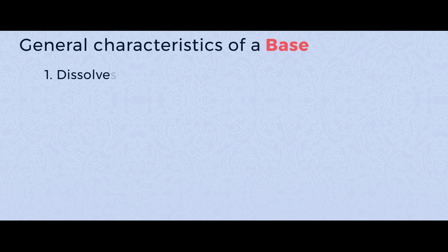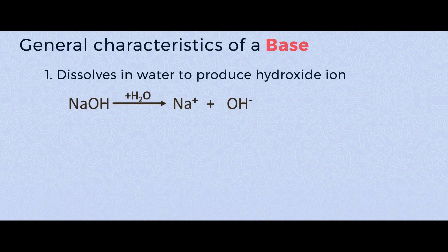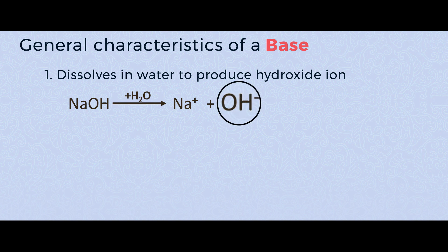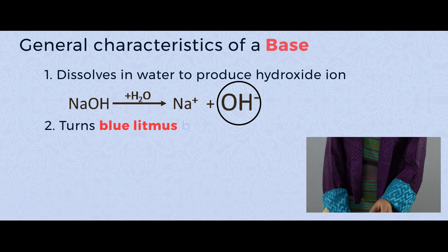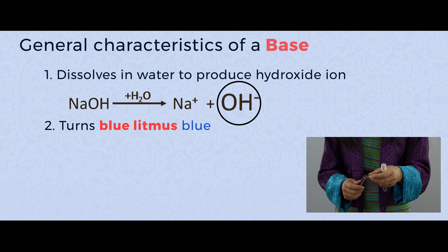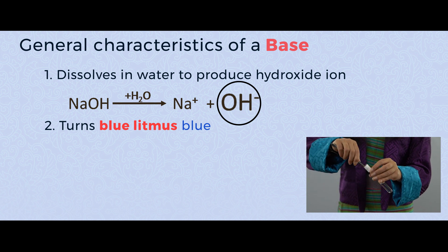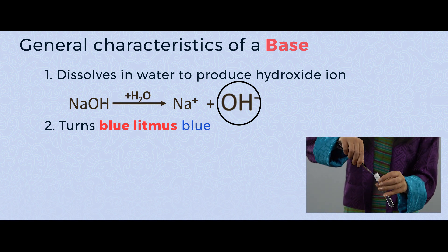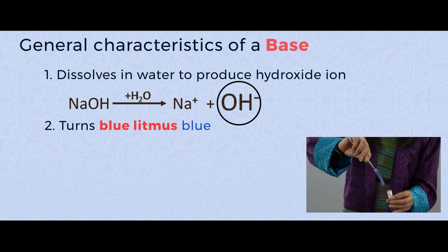Now let's look at the general characteristics of a base. Base dissolves in water to produce hydroxide ion (OH⁻). Remember, acid produces hydrogen ion, while base produces hydroxide ion. Number 2: base turns red litmus blue. In this solution of sodium hydroxide, I'm going to insert red litmus paper, and you can see it has turned blue.